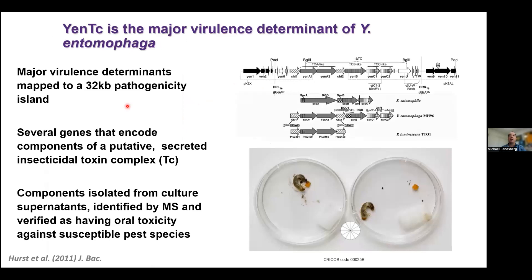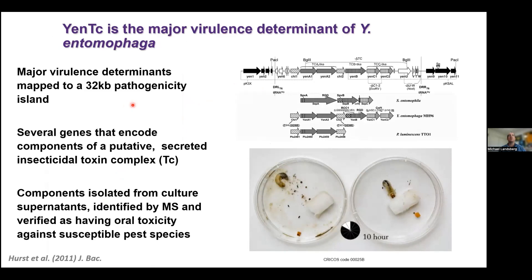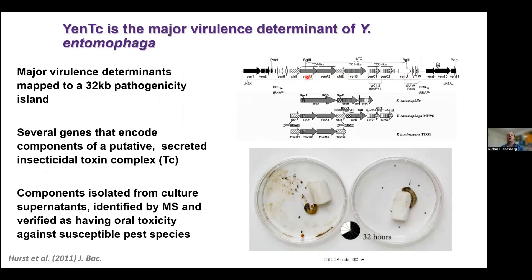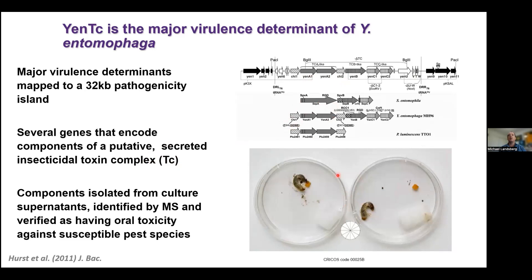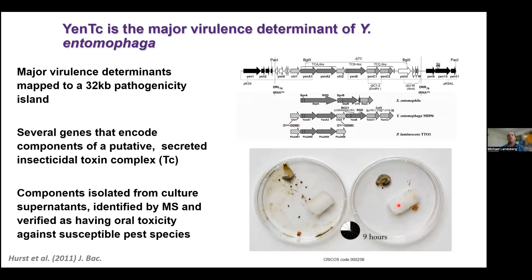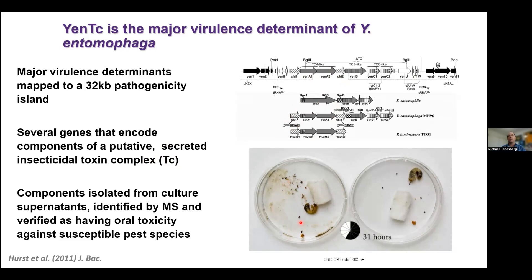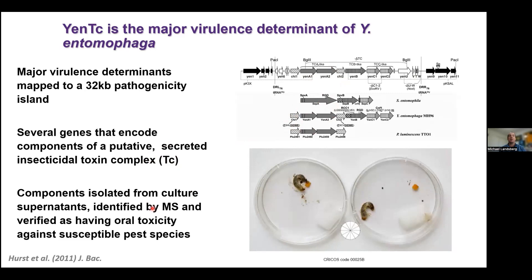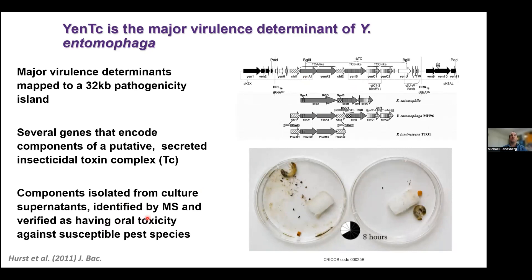Through genetic experiments conducted primarily by my collaborator Mark Hurst in New Zealand, the main virulence determinants of Y. entomophaga were localized to a 32 kb pathogenicity island. There was a series of genes showing similarity to a recently described family of insecticidal toxin complexes, or TCs. When you knock out those genes you have a relatively benign bacterium, but when wild-type bacteria are fed to a susceptible insect, within 24–48 hours there's a very drastic effect leading to the insect's death.